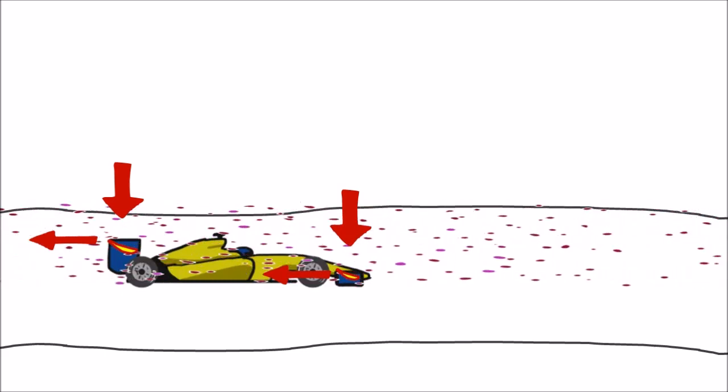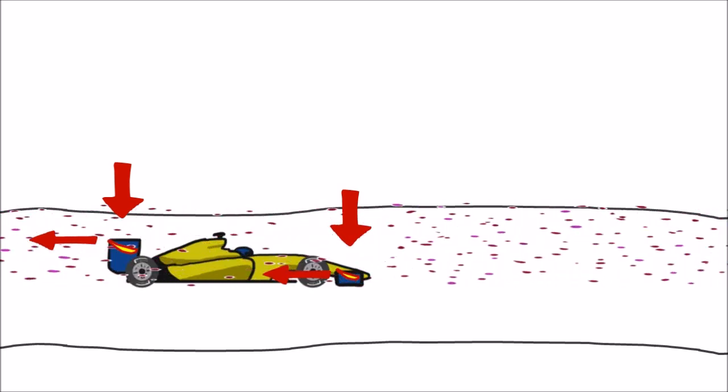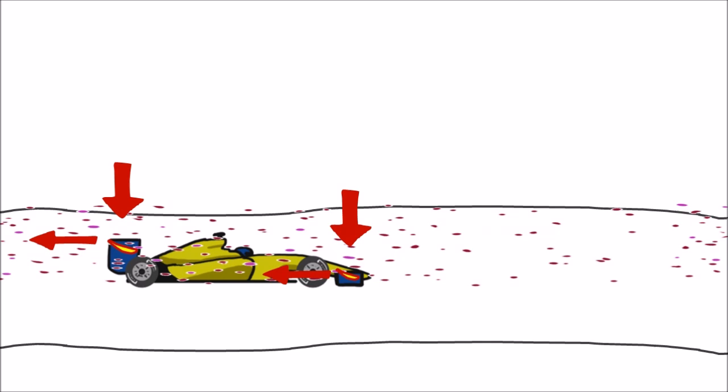So essentially, downforce is great for going through corners quickly, but the drag you get can be terrible for getting some decent top speeds on the straights. That's why setup is so important.